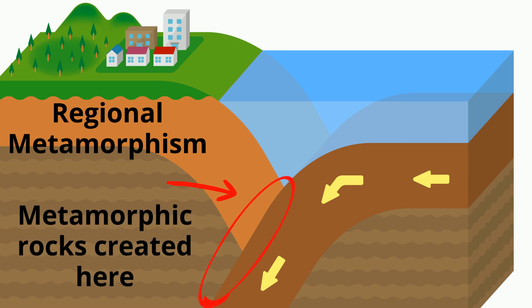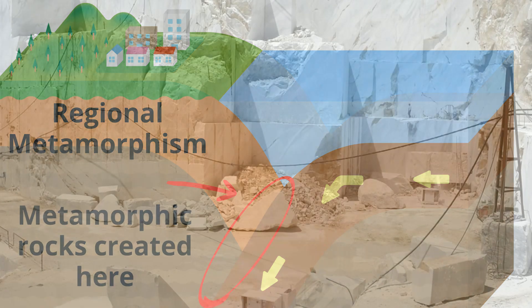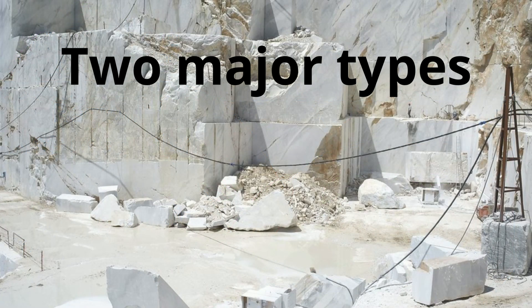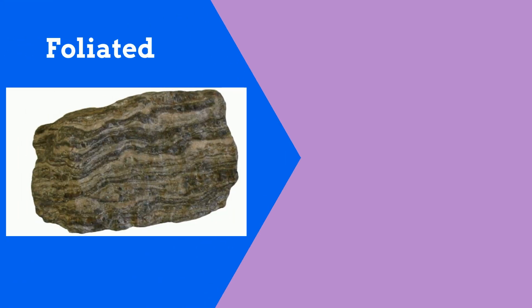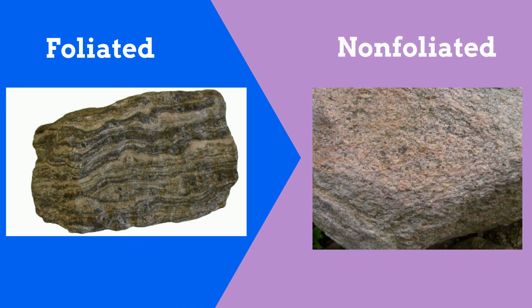Two major types of metamorphic rocks are foliated rocks, which have layers or bands, and non-foliated rocks, which do not have these layers or bands.